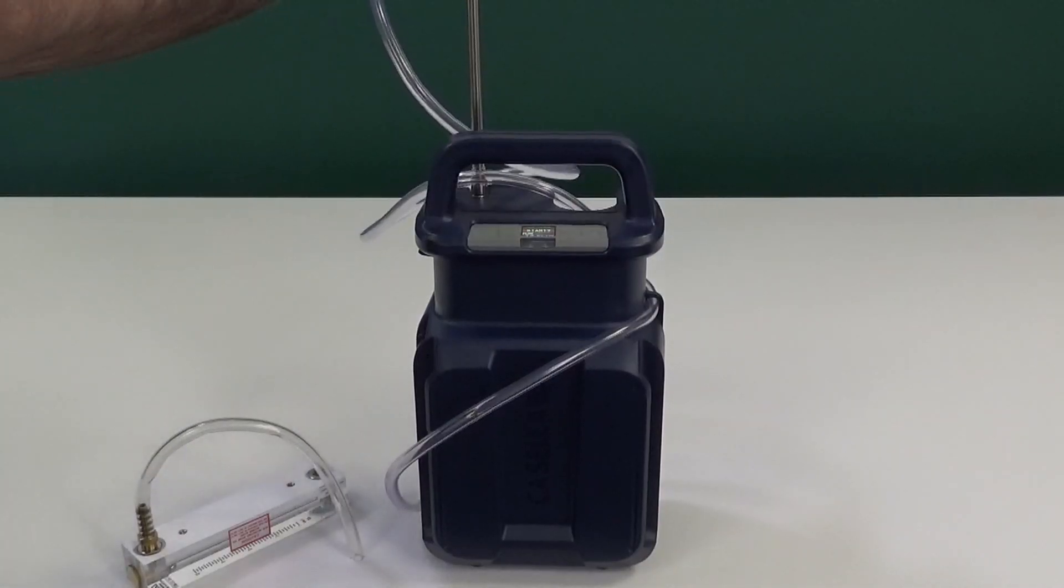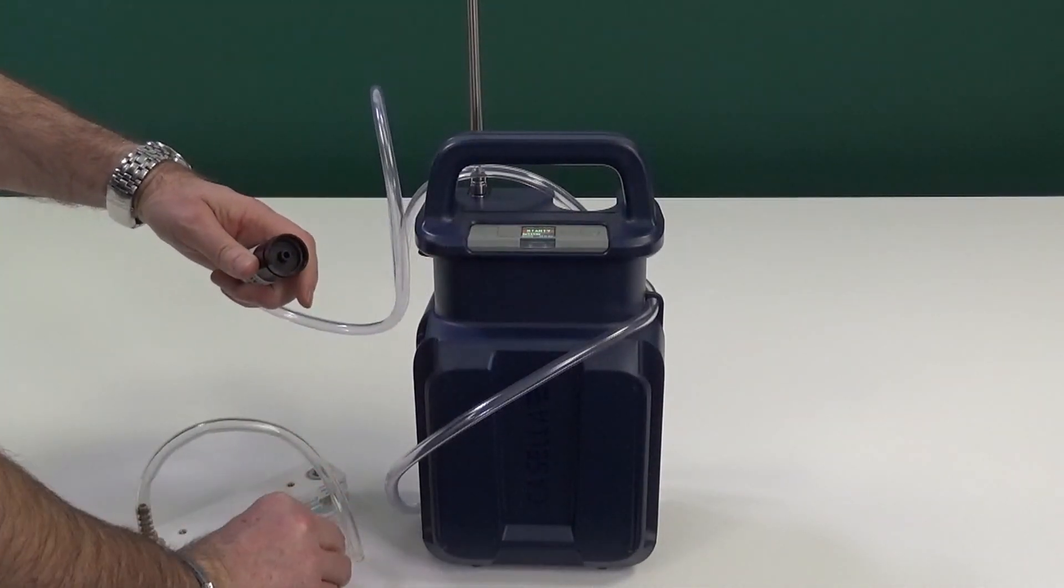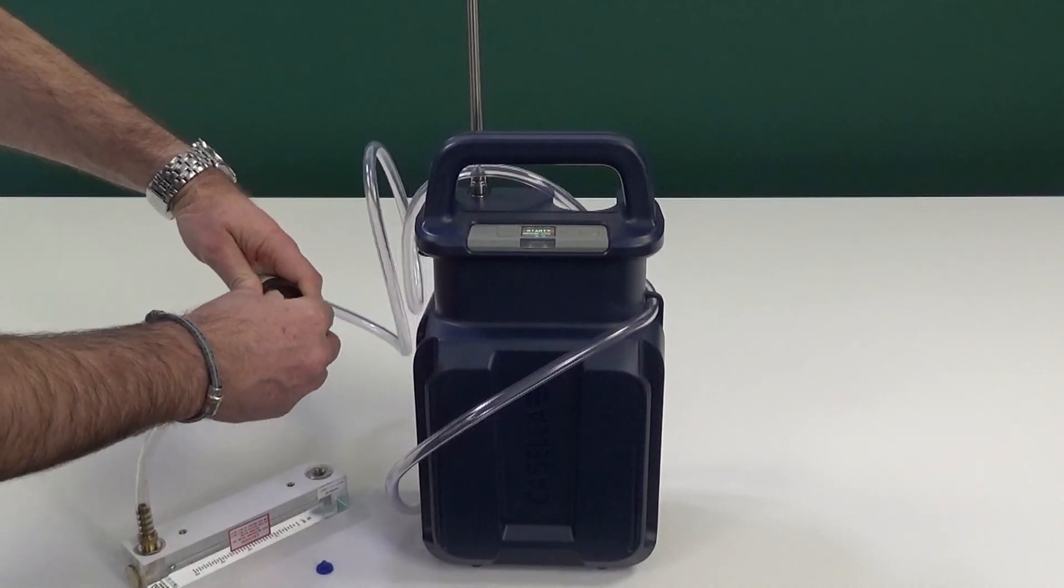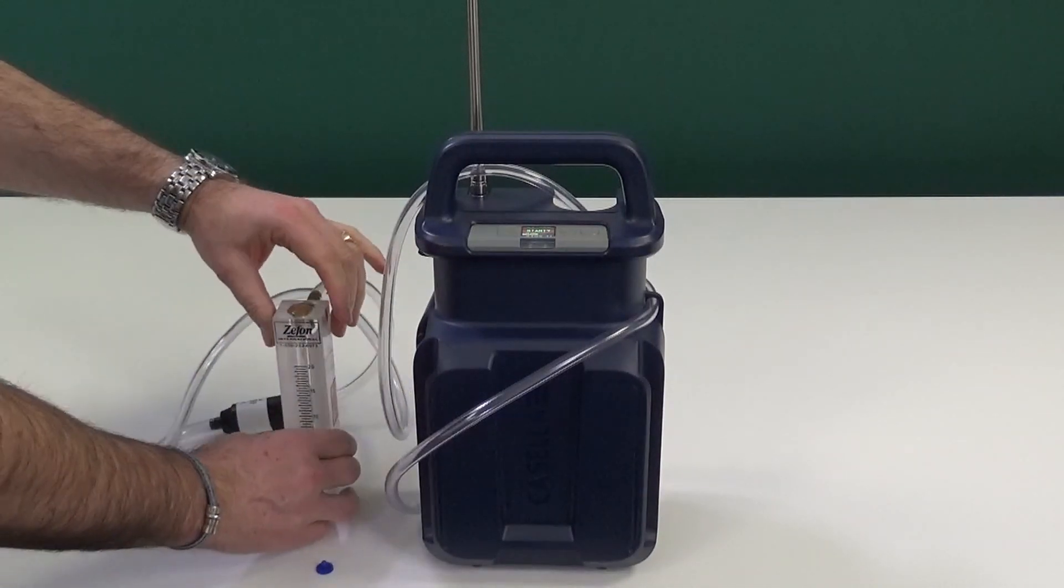To assemble the sample train ready for calibration, attach the sampling head to the rotameter. Note that the rotameter goes before the sampling head, not between the sampling head and the pump. Ensure the connections are secure to prevent leaks.